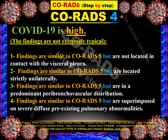CO-RADS 4 means high possibility of COVID-19 and is not extremely typical. It shares the same features as CO-RADS 5 — ground glass opacity, peripheral or pleural location, and multiplicity — but with some exceptions. If any one of these exceptions is present, we classify it as CO-RADS 4: the lesion is not in contact with the visceral pleura; the lesion is unilateral; ground glass opacity is in both perihilar and peripheral distribution but with perihilar more prominent than peripheral; or there is a pre-existing pulmonary disease or lung abnormality.